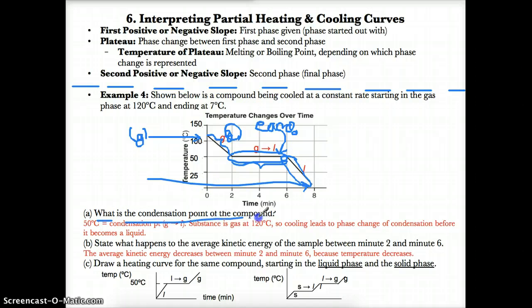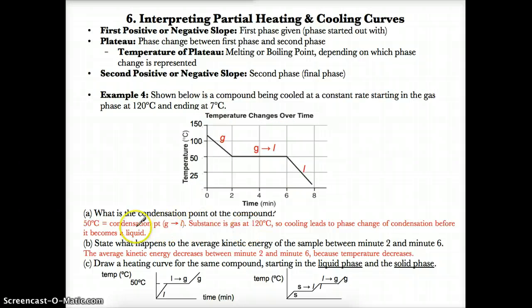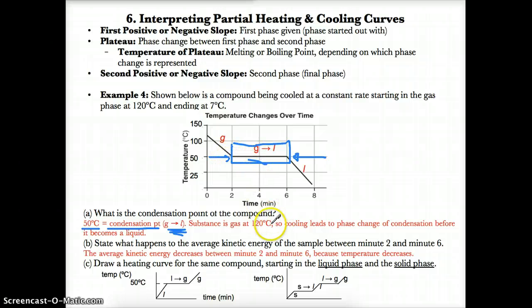Part A asks: what is the condensation point of the compound? Condensation occurs between time intervals 2 minutes and 6 minutes — it's what comes after the gas phase and before the liquid phase. The Y value at condensation is 50 degrees Celsius, so the condensation point of the compound is 50 degrees Celsius.